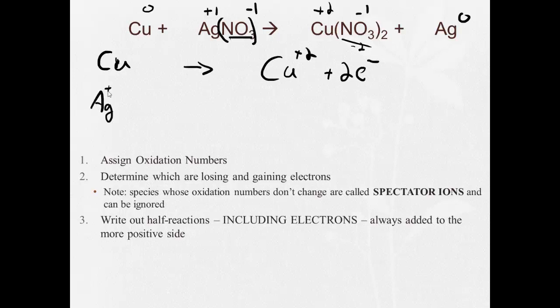Silver, at a plus one, is becoming silver zero. Now how does it do that? Well, it does it by gaining, that's why I left the space here, by gaining one electron.